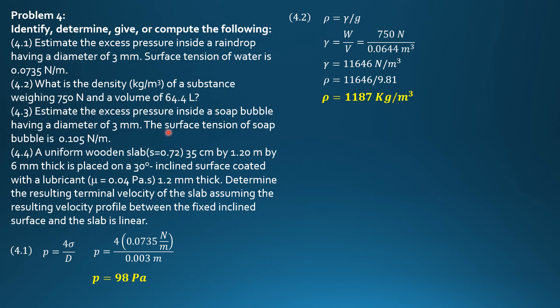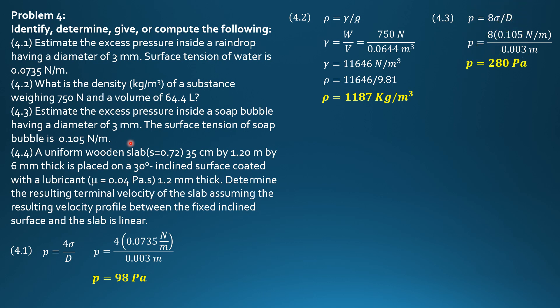Then, estimate the excess pressure inside a soap bubble having a diameter of 3 mm. The surface tension of the soap bubble is 0.105 N per meter. So, the formula for excess pressure inside a soap bubble is 8 times surface tension over diameter. So, pressure equals 8 times 0.105 N per meter over 0.003 meter. So, in Pascals, the excess pressure is 280 Pascals.